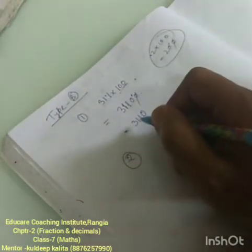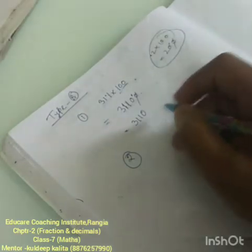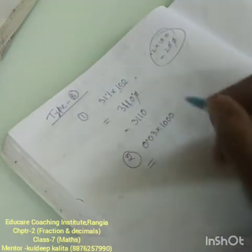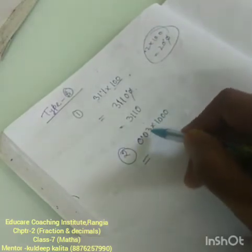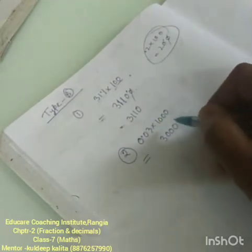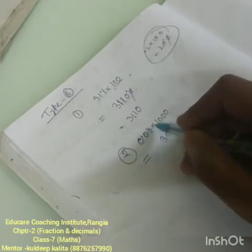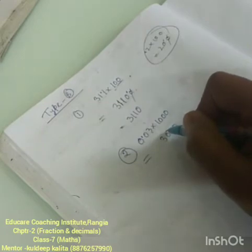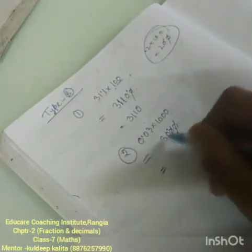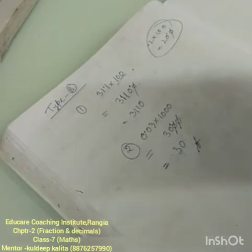Number 2: 0.03 into 1000. 0.03 means 3, and 3 into 1000 is 3000. But the decimal is before 2 digits, so we put the decimal accordingly. The answer is 30. That is how we do Type B questions — clear?